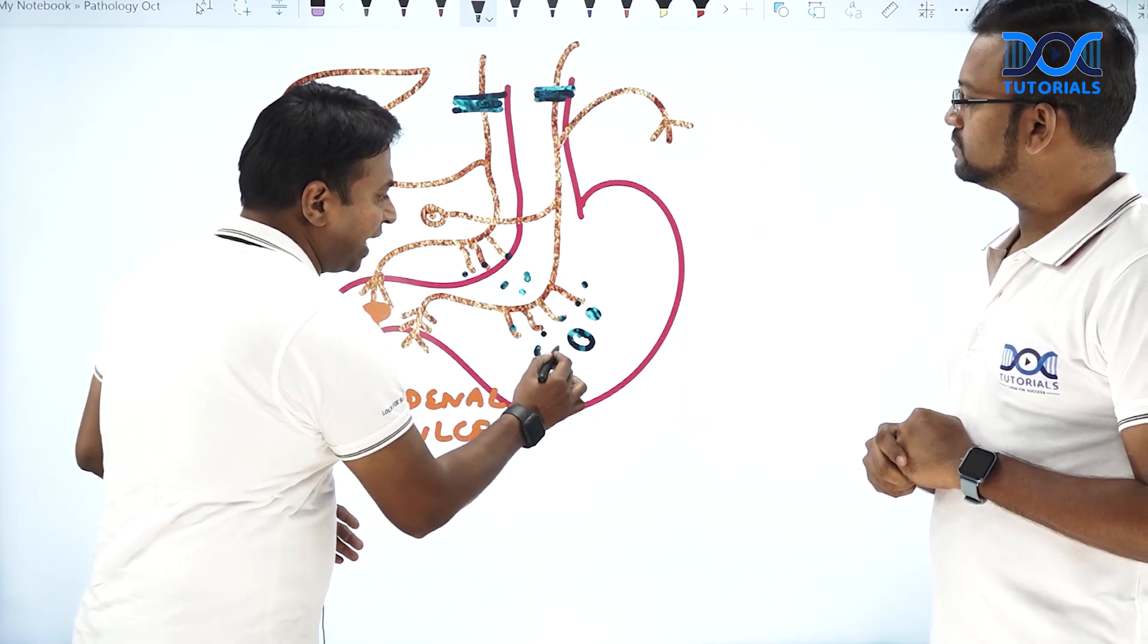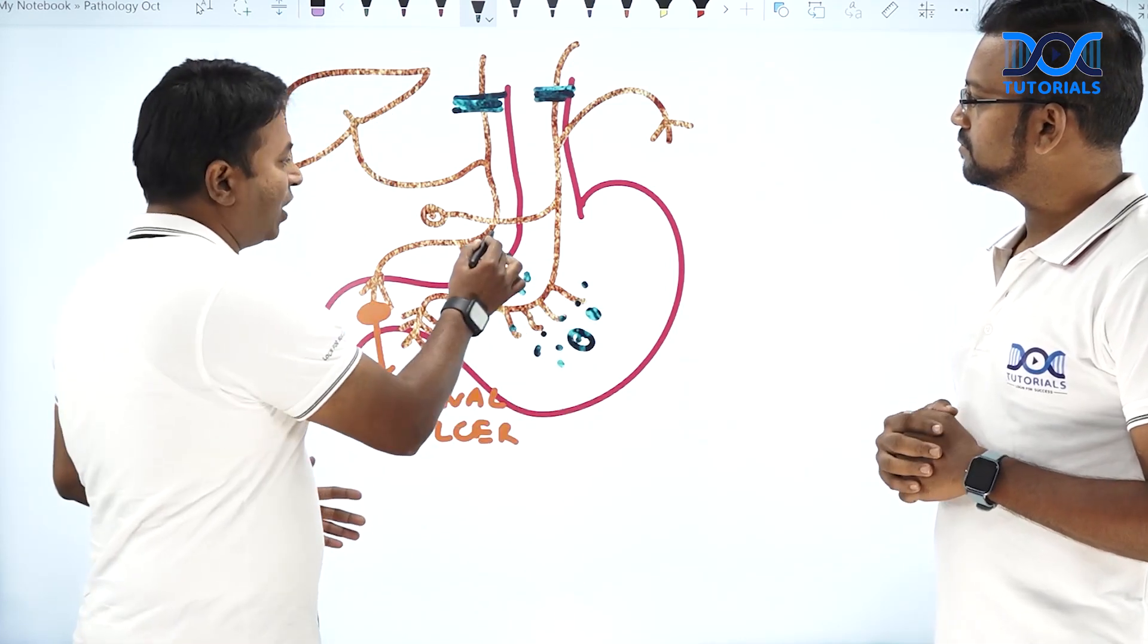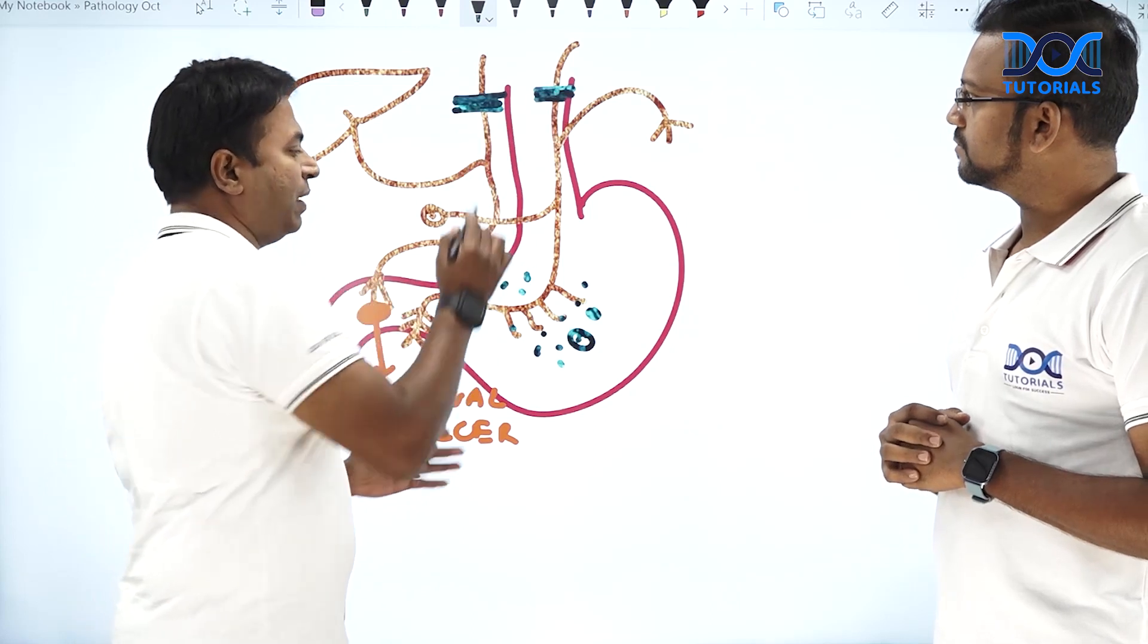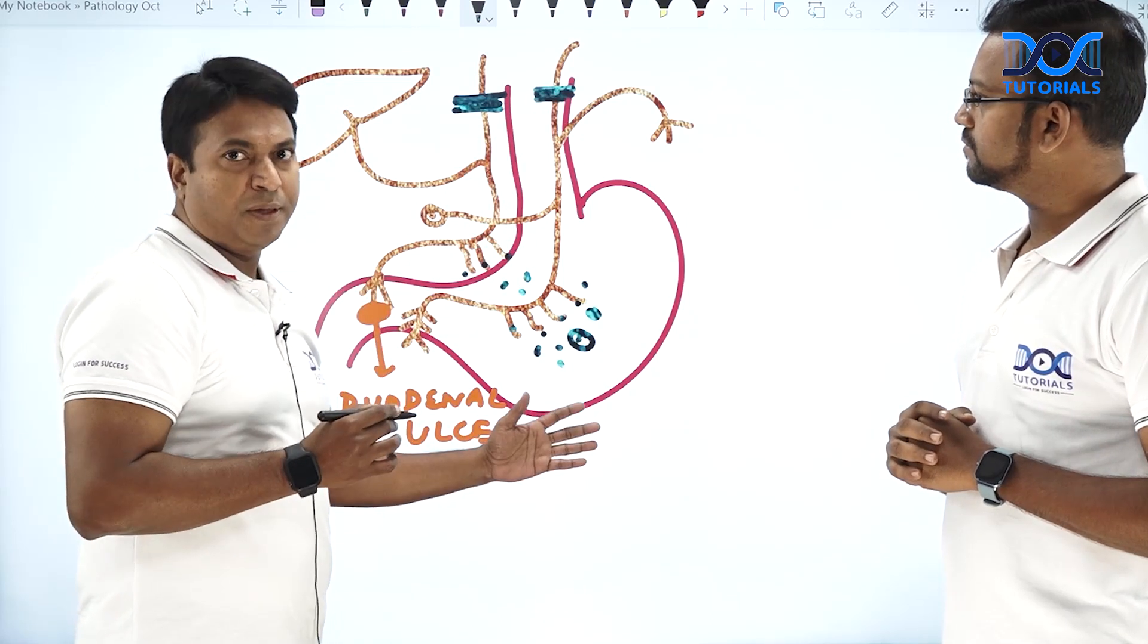These parietal cells more in the antrum, they are going to produce the acid. We are going to do truncal vagotomy. All this acid will be stopped. Then the ulcer will heal.